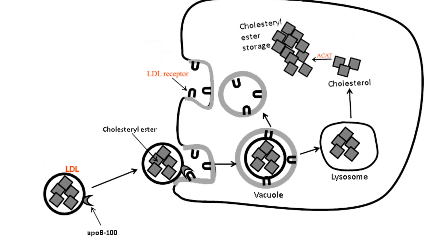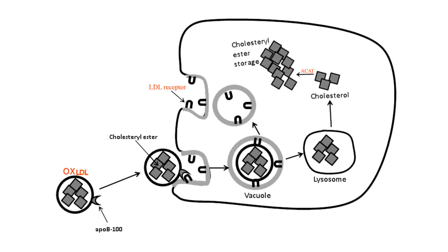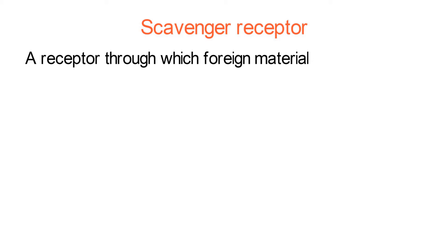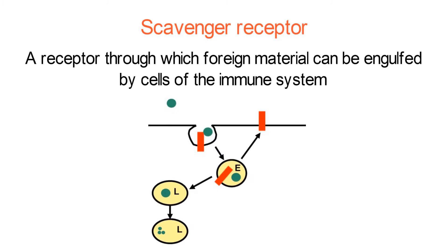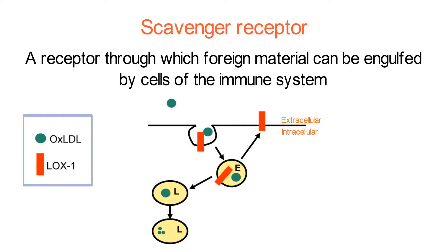However, after LDL cholesterol is oxidized, it becomes immunogenic, meaning the immune system responds to it as if it were foreign material that needs to be contained. Therefore, when LDL cholesterol becomes ox-LDL, it will not enter cells through the LDL receptor but through the scavenger receptor, which is the receptor through which foreign material can be engulfed by cells of the immune system. Specifically, macrophages, which ingest foreign material for destruction through phagocytosis, are able to engulf ox-LDL.